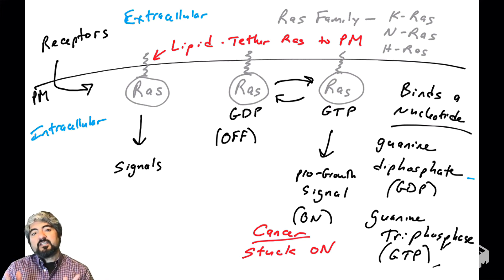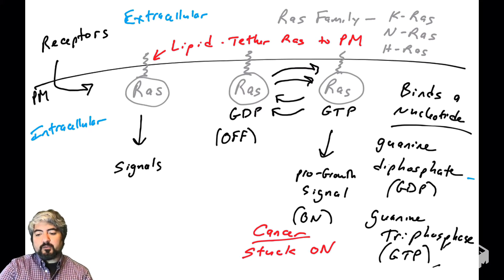In this video we're going to continue talking about RAS. RAS is a G protein that binds either GTP or GDP, and that binding determines whether a cell should go through the cell cycle. When RAS is bound to GTP, that is a pro-growth signal telling cells to go through the cell cycle, and many cancer cells are stuck in that position. We need to talk about what controls RAS and whether it's bound to GTP or GDP. We're going to spend at least two videos talking about how RAS is regulated in normal human cells.